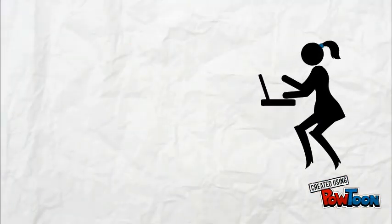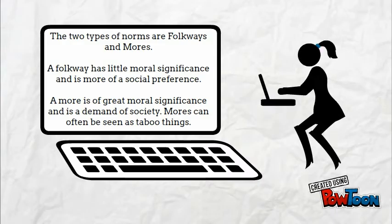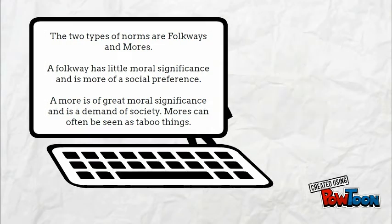Social norms can be broken down into two parts: folkways, which hold little moral significance and is more of a preference, versus mores, which hold great moral significance and are more considered to be laws.